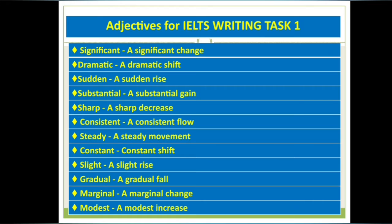The first word we are mostly using is 'significant' — we can say 'a significant change' whenever there is some kind of change in Task 1. 'Dramatic' is another word — we can use 'a dramatic shift.' Try to use different words in your writing Task 1 to show different types of changes, like change, shift, rise, gain, decrease, fall, or movement.